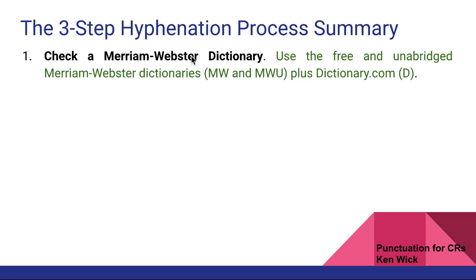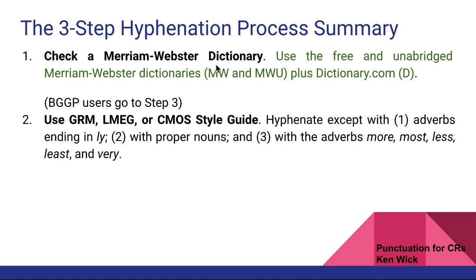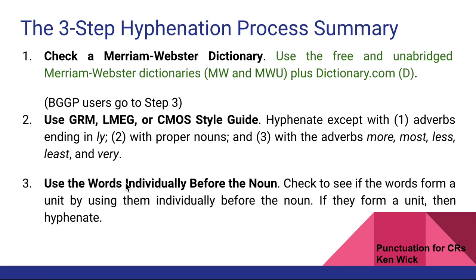Just a summary of the three-step process. Step one: check a Merriam-Webster dictionary — I'll check the free and unabridged online versions, plus dictionary.com which is based on Random House, since LMEG refers to Random House and GRM uses Merriam-Webster. Step two: use the style guides. Basically you hyphenate everything except adverbs ending in -ly, proper nouns, and certain adverbs. Step three: use the words individually before the noun to see if they form a unit.